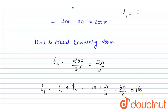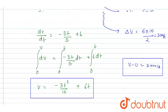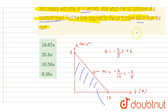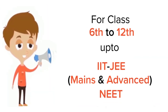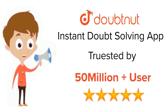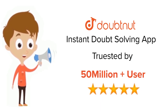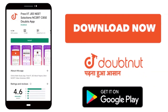Checking the options, option A is the correct answer. For class 6 to 12, IIT JEE and NEET level, trusted by more than 5 crore students — download DoubtNet.